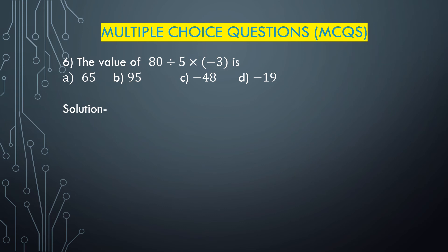Question number 6: The value of 80 divided by 5 multiplied with minus 3 is — option A is 65, option B is 95, option C is minus 48, and option D is minus 19. Applying BODMAS, first we divide: 80 divided by 5 is 16. Then 16 multiplied with minus 3 — plus times minus is minus, and 16 times 3 is 48, so it is minus 48. Therefore option C, that is minus 48, is the correct answer.